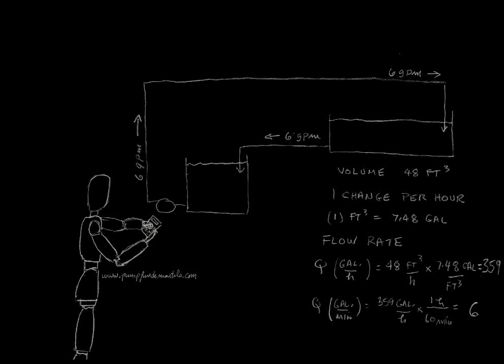The flow rate that will correspond to one change per hour will be 48 cubic feet per hour. I will use gallons instead of cubic feet and there are 7.48 gallons in a cubic foot. Therefore, the flow rate is 48 times 7.48, which is 359 gallons per hour. Let's change this to gallons per minute, which is a very typical unit, although gallons per hour is also used for small pumps. Which means I divide 359 by 60, since there are 60 minutes in an hour, and I get 6 gallons per minute.